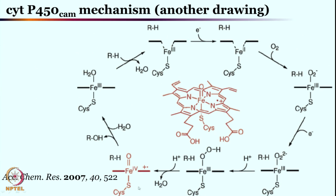Now, you must be wondering what is the difference between hemoglobin, myoglobin, and cytochrome P450. In the case of hemoglobin and myoglobin, you have up to the iron superoxo species, but none of the further steps are happening. What really differentiates them is the cysteine axial ligand — that proximal ligand — compared to the histidine seen in hemoglobin.